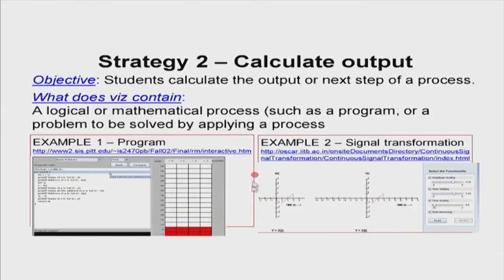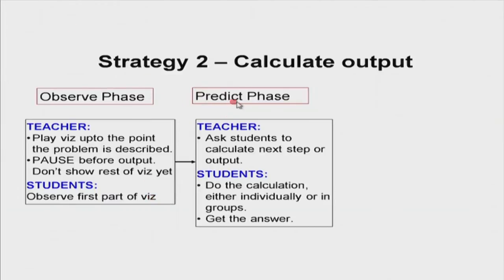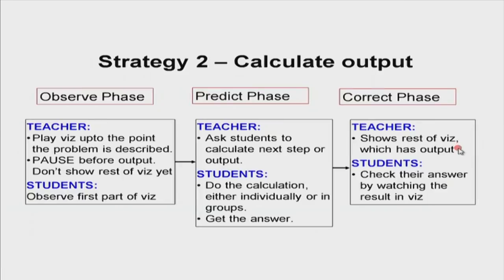In a way it is similar to the previous process. In the observe phase, the teacher plays the visualization up to the point where the problem is described but pauses before the result. Students observe the first part. In the calculate phase — this is analogous to the predict phase — the teacher asks students to calculate the next step or output, either individually or in groups depending on difficulty. The goal is for students to actually do the calculation. In the correct phase, the teacher shows the rest of the visualization with the answer, and students check their answer and discuss why it was right or wrong.